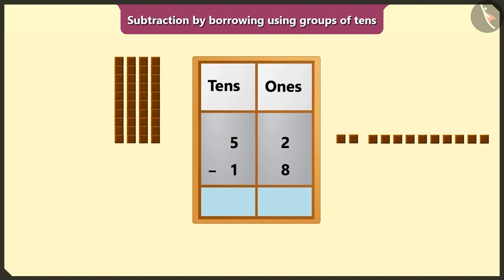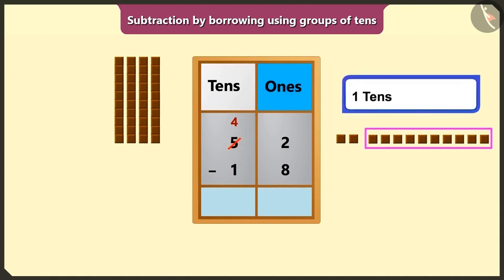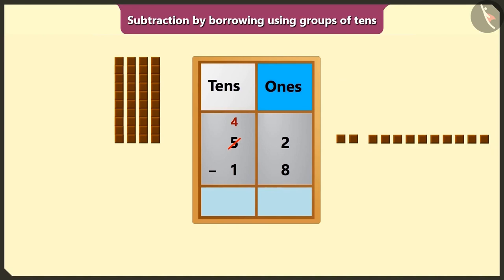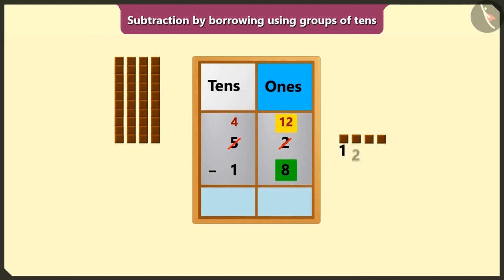So, borrowing 1 ten from the 5 tens means subtracting 1 ten from 5 tens, which makes it 4 tens. So here 1 ten will be less in the place of tens. Now in the box of ones, 1 borrowed ten equals 10 ones. So it will be 2 ones plus 10 ones — meaning 12 ones. Now if we subtract 8 ones from 12 ones we will have 1, 2, 3 and 4 left. So we will write 4 in the place of ones.